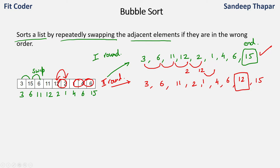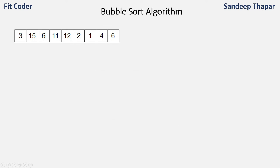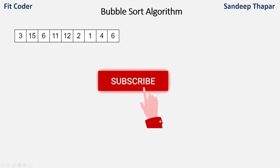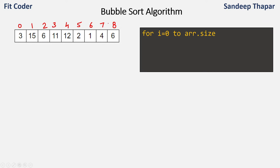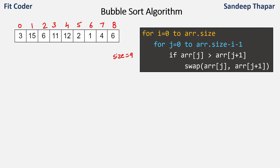Now that we've understood the concept, let's see the pseudocode for bubble sort. We run a for loop from i equal to 0 till the size of the array — the size of this array is 9. Then we have an inner for loop which runs from j equal to 0 to array size minus i minus 1. We do this because in each iteration of bubble sort we place the largest element at the end, so for the next iteration we do not need to consider those already-placed largest elements. The inner loop limit is reduced by i minus 1.